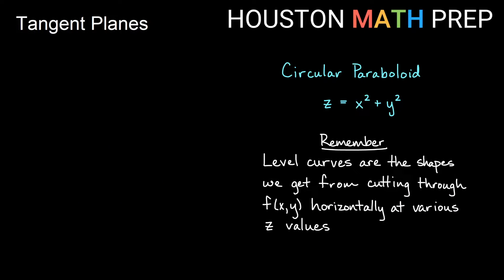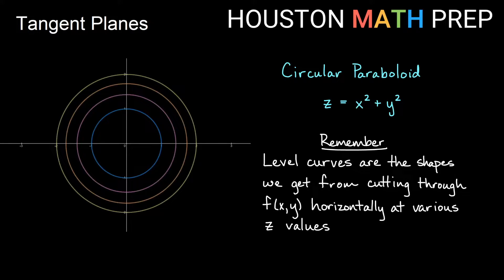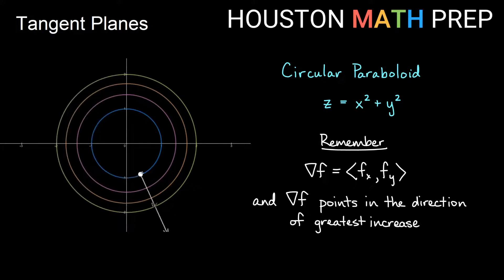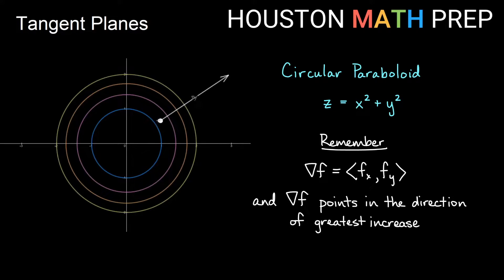Remember that level curves are just the shapes we get from cutting through the graph of our f of x, y horizontally at different z values. For z equals x squared plus y squared, plugging in different values for z gives x squared plus y squared equals some number — those are circles centered at the origin. If you think about our gradient, del f, we get its components from partial derivatives. Del f points in the direction of greatest increase. As we go higher slicing through our paraboloid, the circular sections are farther out, so our gradient points farther out. The gradient not only points in the direction of greatest increase but is also normal to these level curves.